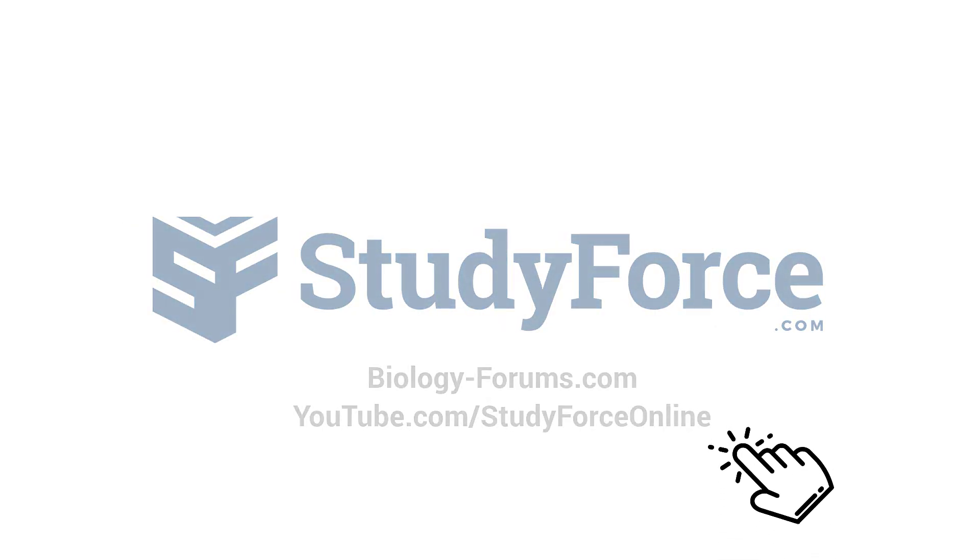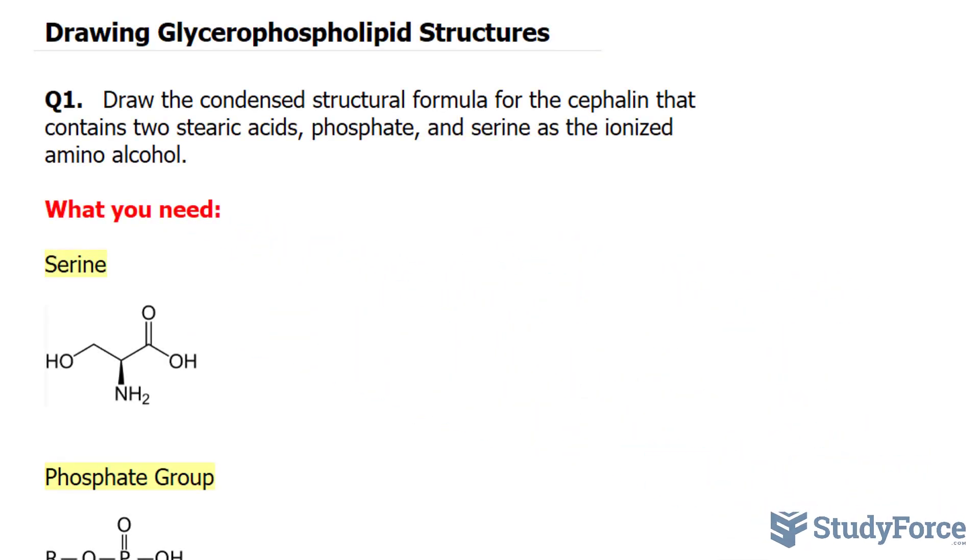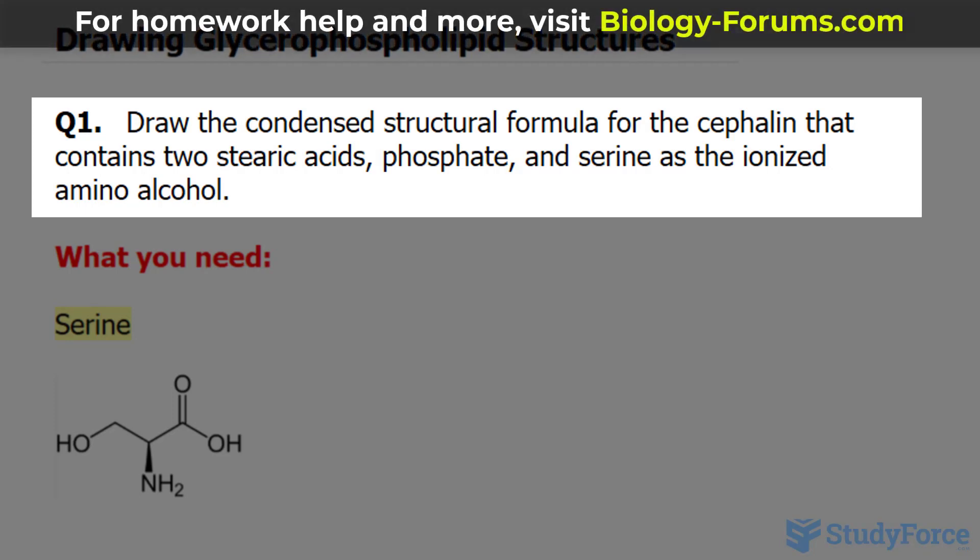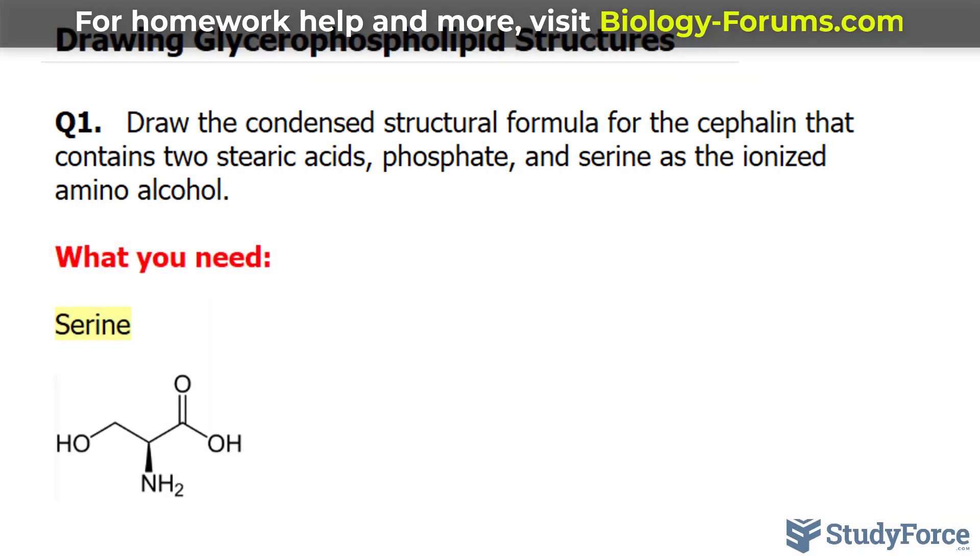In this lesson, we'll learn how to draw glycerophospholipid structures. The question reads: draw the condensed structural formula for cephalin that contains two stearic acids, phosphate and serine, as an ionized amino alcohol.